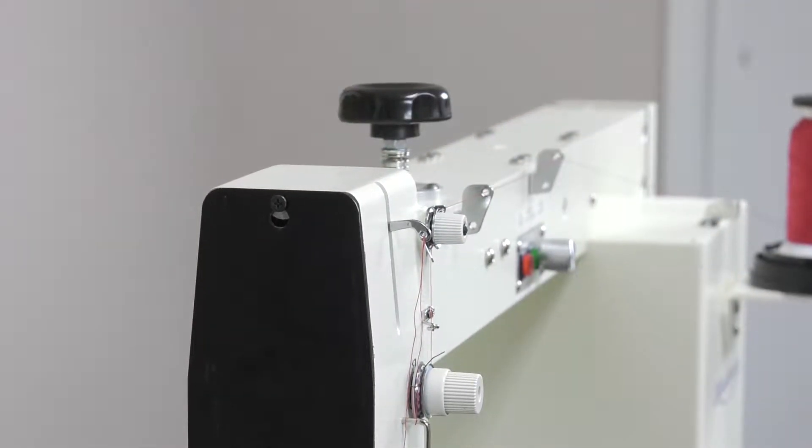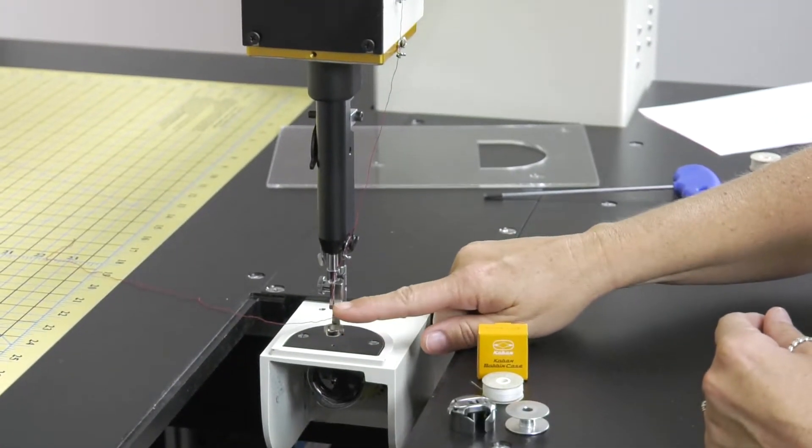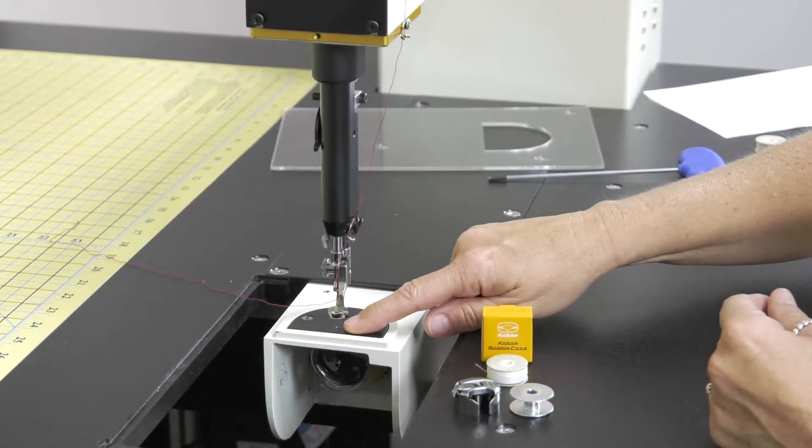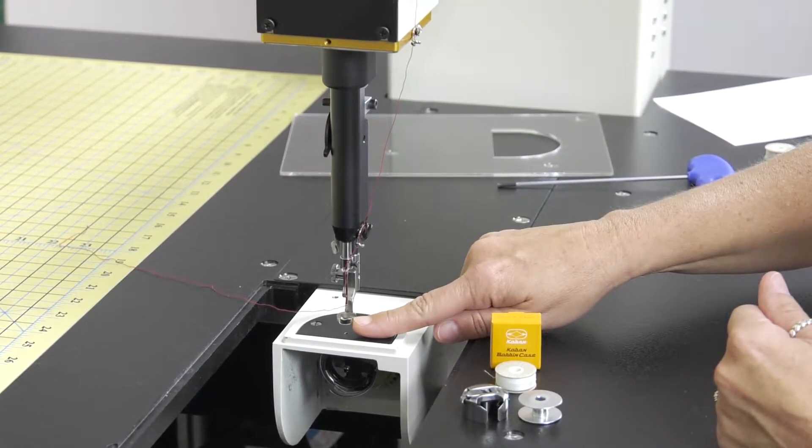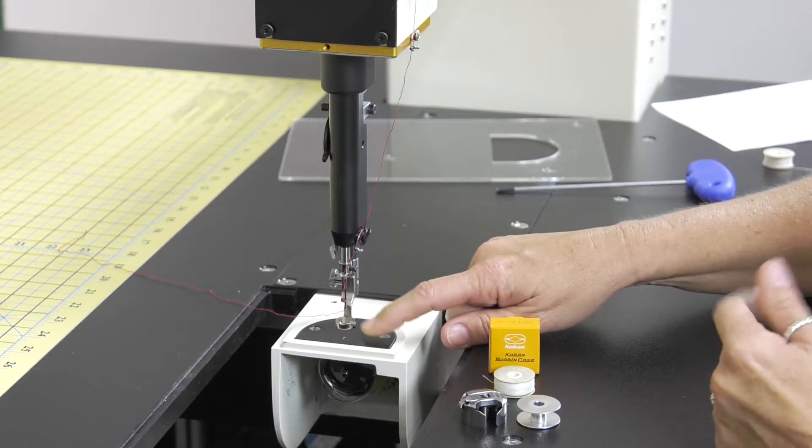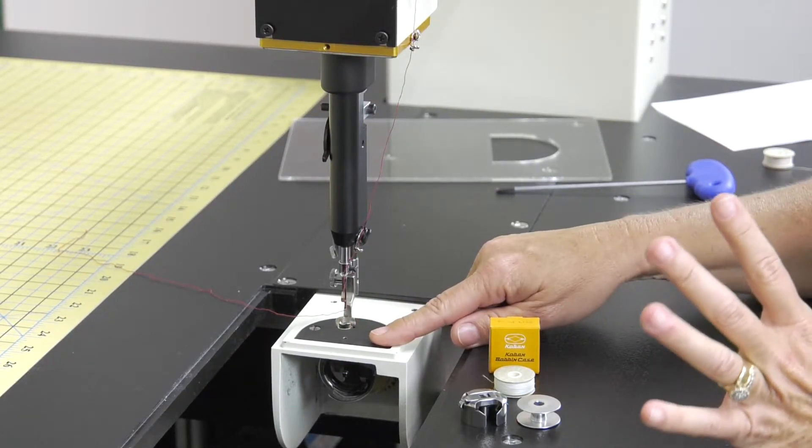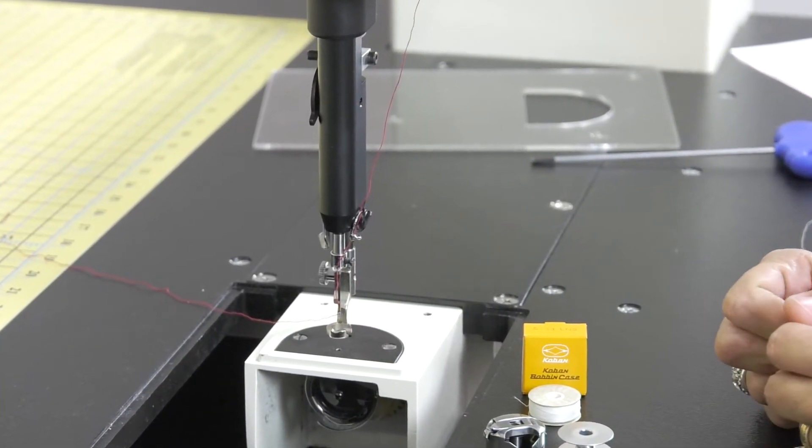One thing that can happen is if the presser foot is raised too high, the needle can get stuck down there and just not want to come up in the up position. That's a fail-safe option on the Martelli machine, but it's not an issue. You haven't caused any damage as long as you don't have any needle breakage or anything like that, everything should still be in working order.